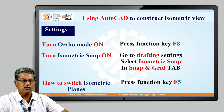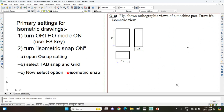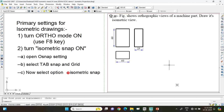Now we shall switch over to the AutoCAD software. We are using AutoCAD 2007, but all versions are going to be very similar to this. We are not going to use any advanced tab functions, so the basic things will remain the same for all versions of AutoCAD — whether it is AutoCAD 2007, 2010, 2020, or 2024.